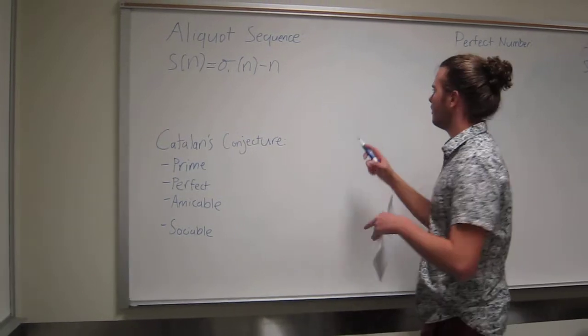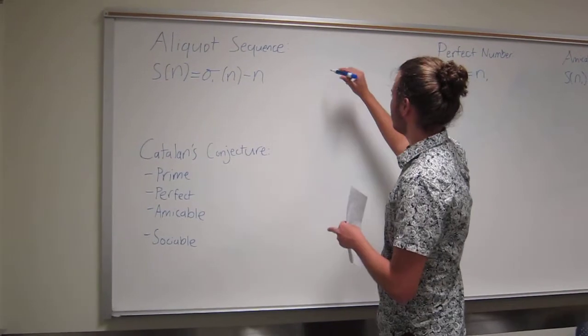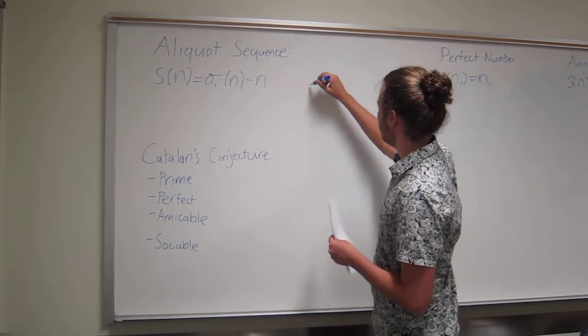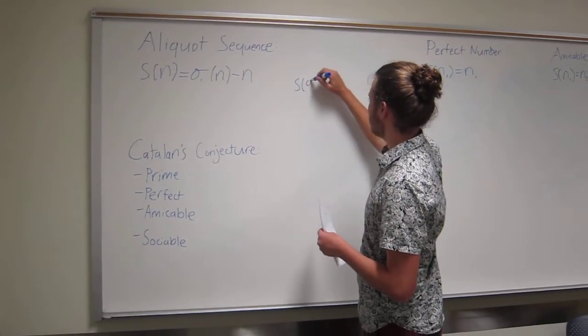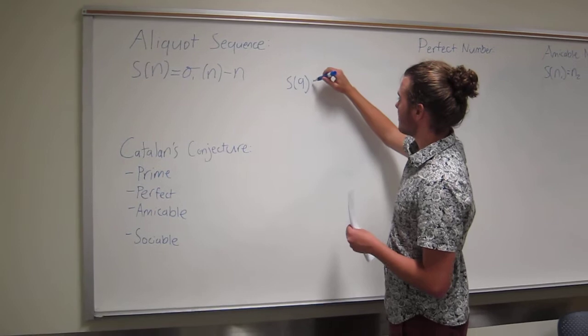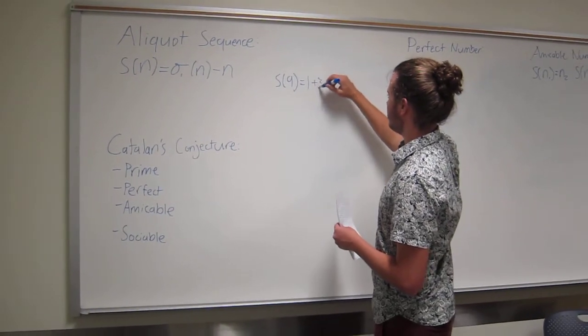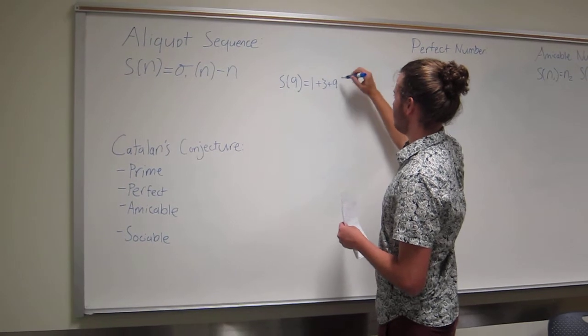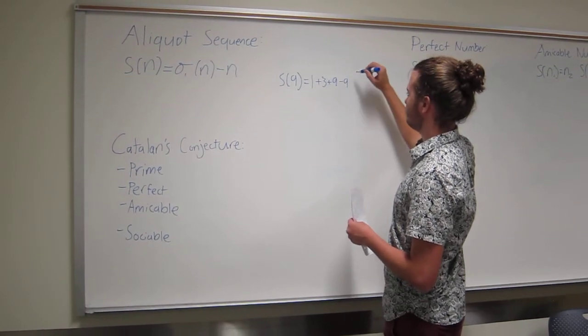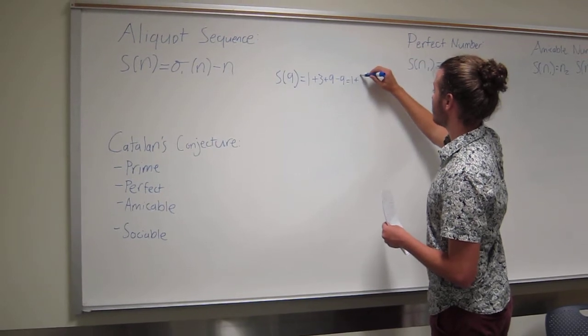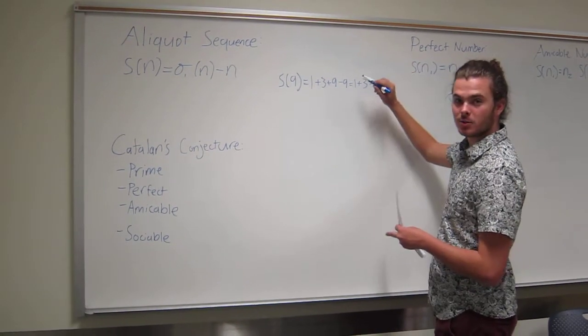You may be a little bit confused so I'll just give you an example. We're going to make an aliquot sequence starting with the number 9. So the sum of the proper divisors of 9 is equivalent to 1, 3, and 9, but then you subtract out that 9, so you just get the sum of 1 plus 3, which is equivalent to 4.